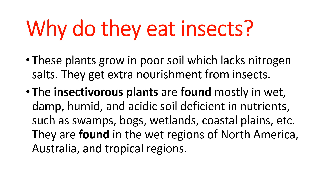Now, why do these plants eat insects? Actually, these plants grow in poor soil which lacks nitrogen salts. So to get extra nourishment, these plants started eating insects. But these plants also make their own food through the process of photosynthesis.